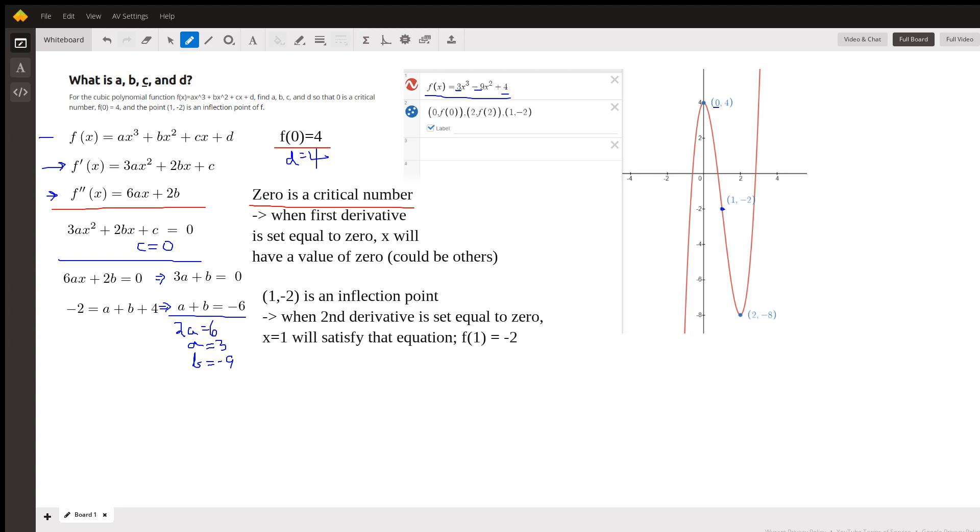If f(0) is 4, that means when I put 0 in for x in this first equation, I get f(0) = 4 equal to b. And so we now know b is 4.